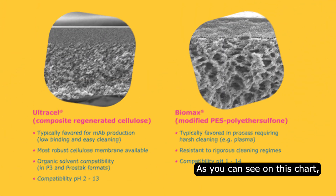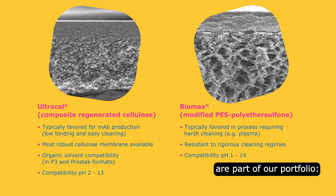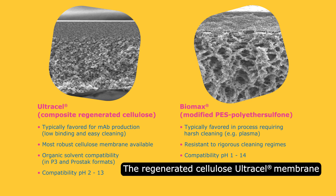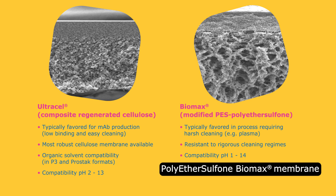As you can see on this chart, two types of ultrafiltration membranes are part of our portfolio. The regenerated cellulose Ultracel membrane, known for its low binding and easy cleaning, and the modified Polyethersulfone Biomax membrane, known for its high flux and wide pH accountability.